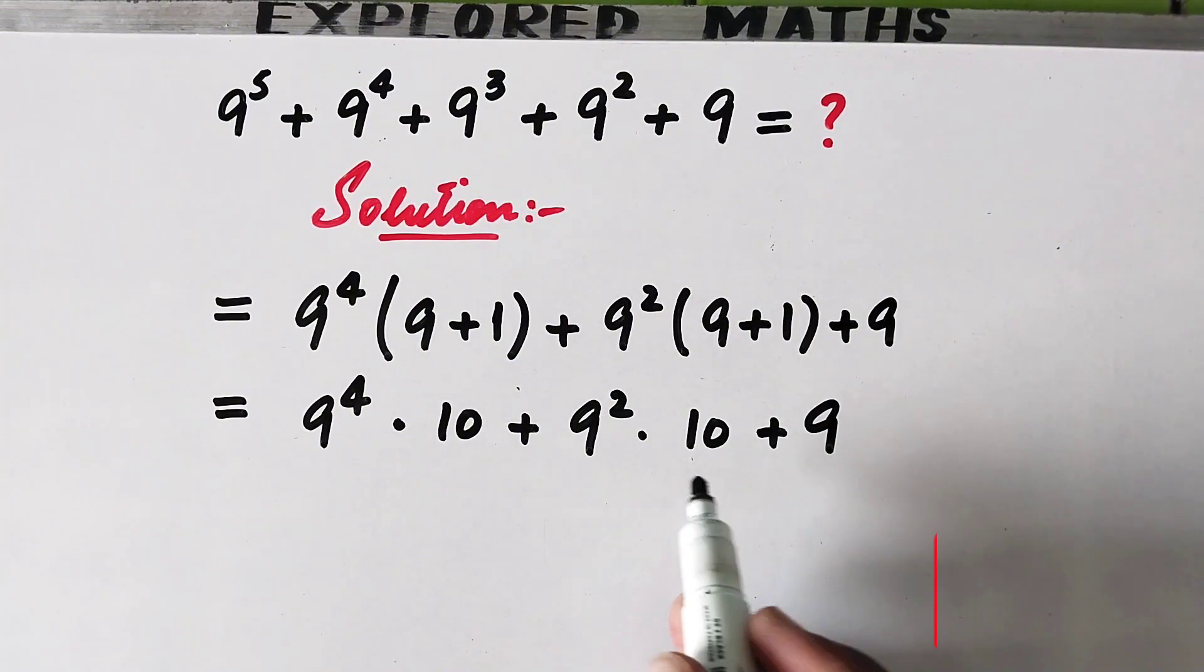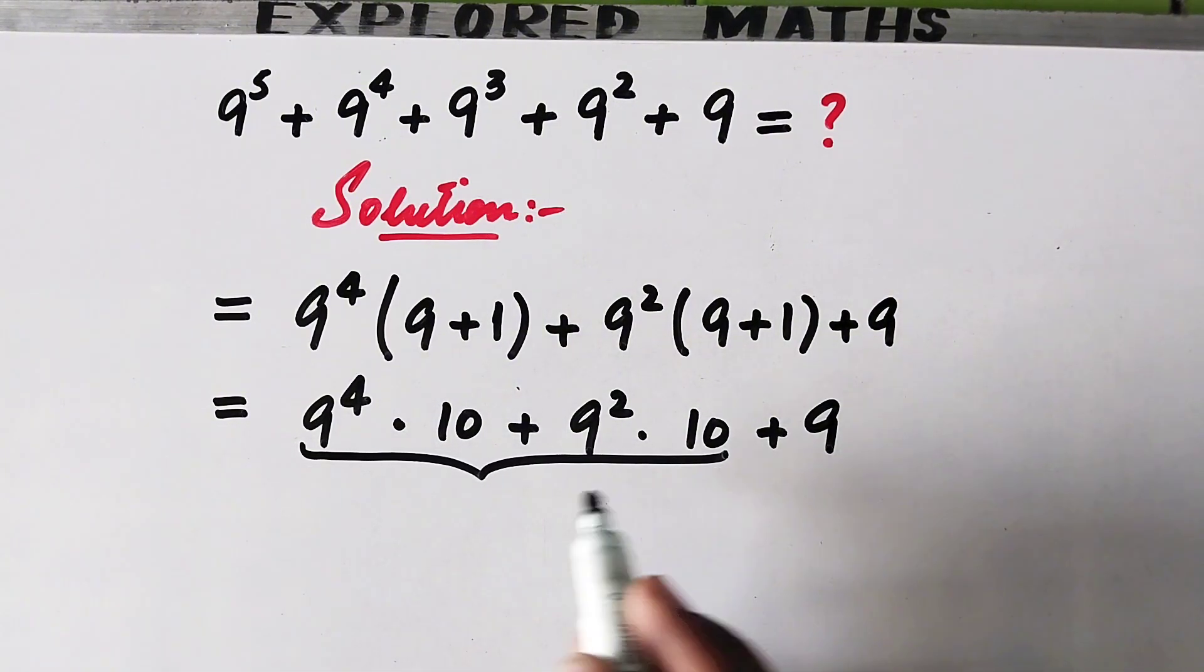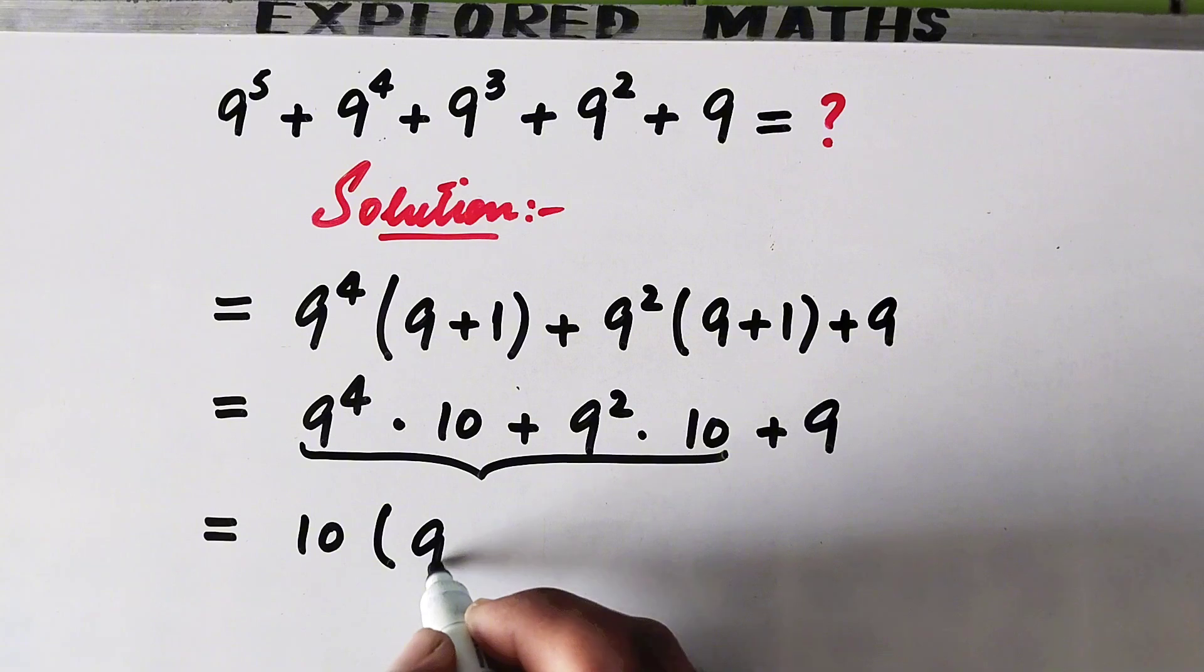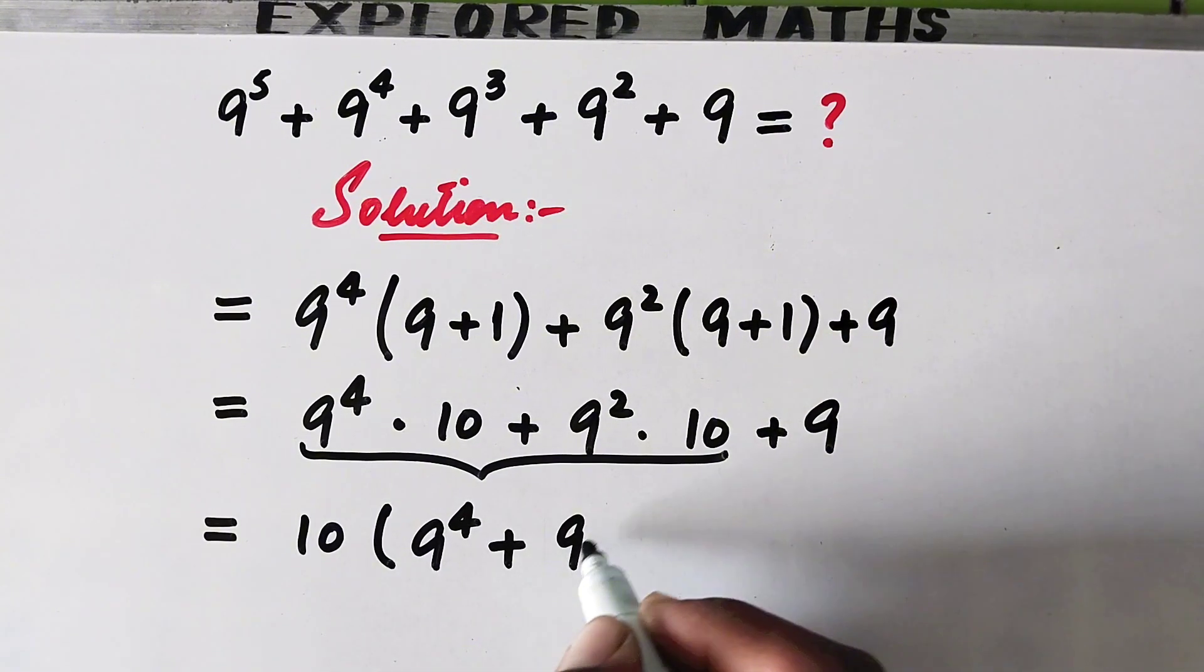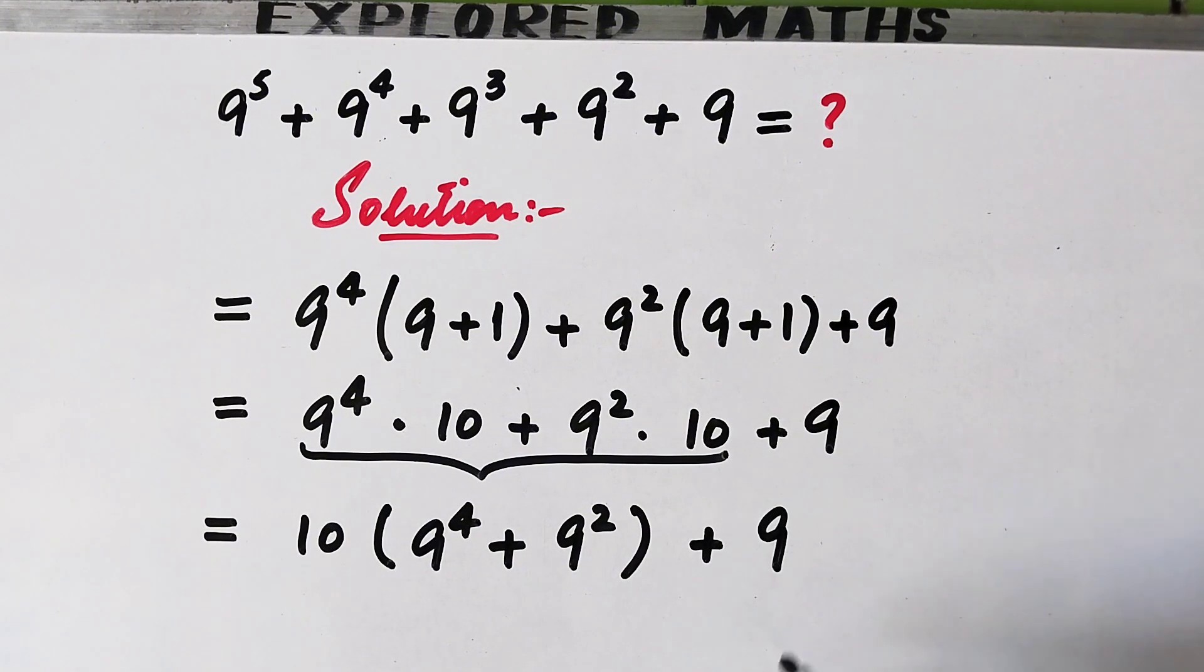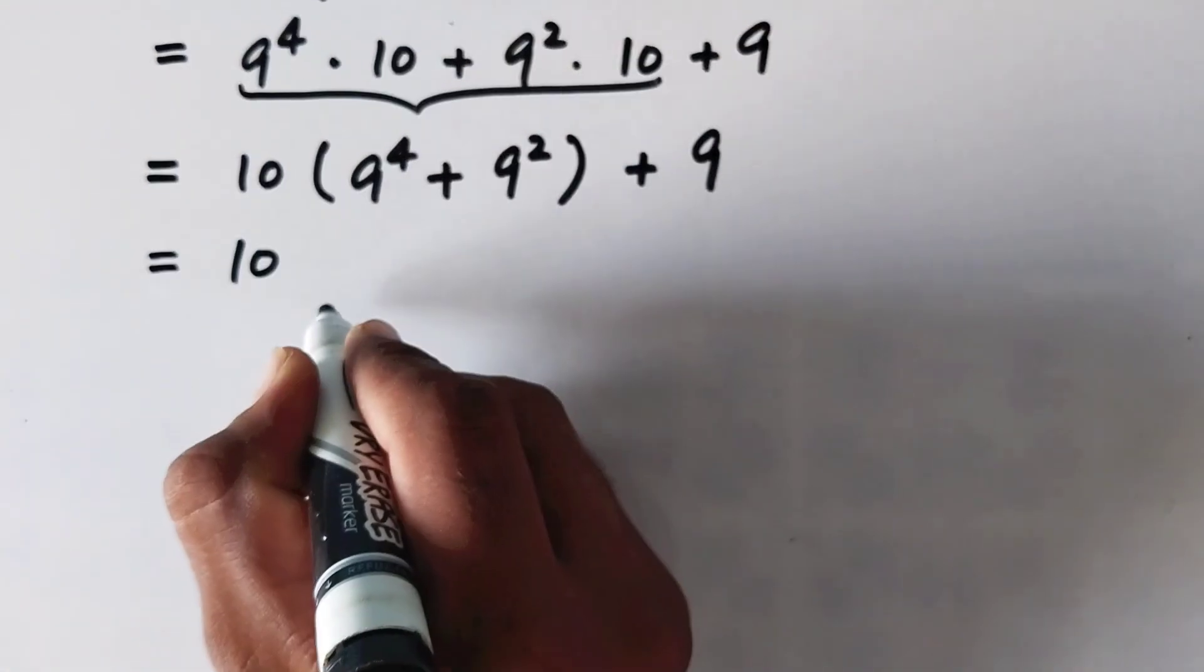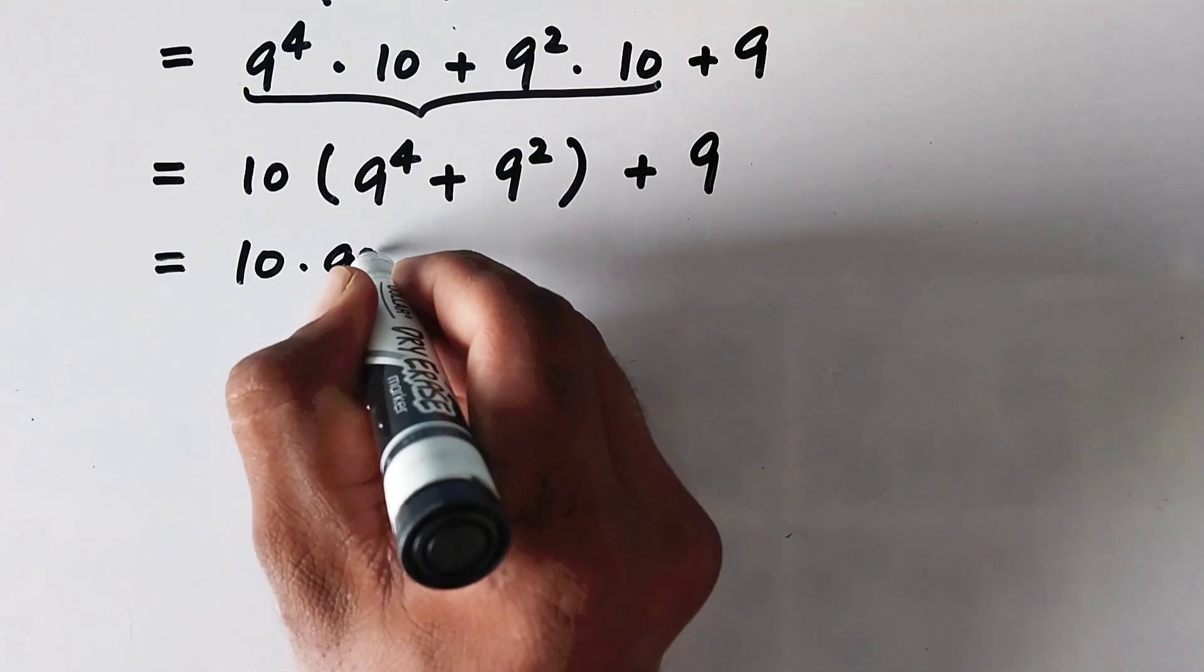Now from these two terms we will take 10 out as a common factor, so that here left is 9 to the power 4 plus 9 square plus 9. This will be equal to 10, and here we will take 9 square common again.